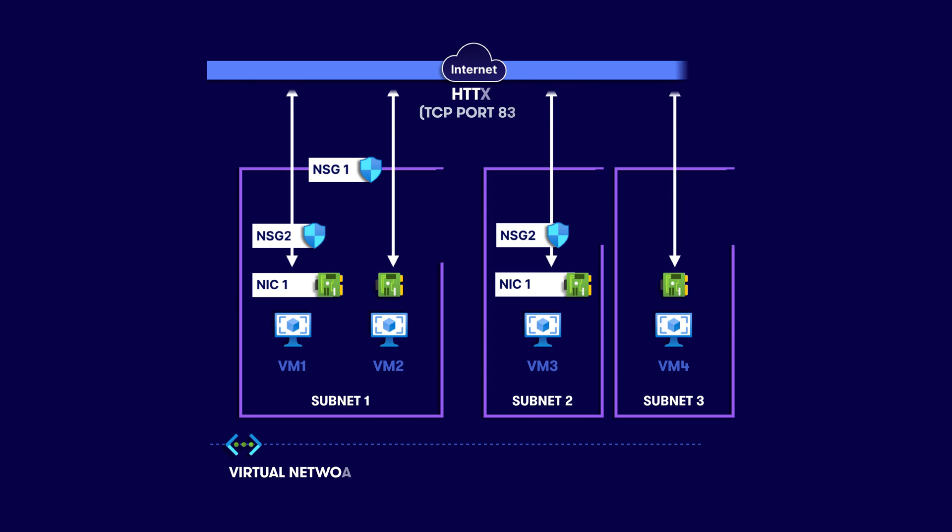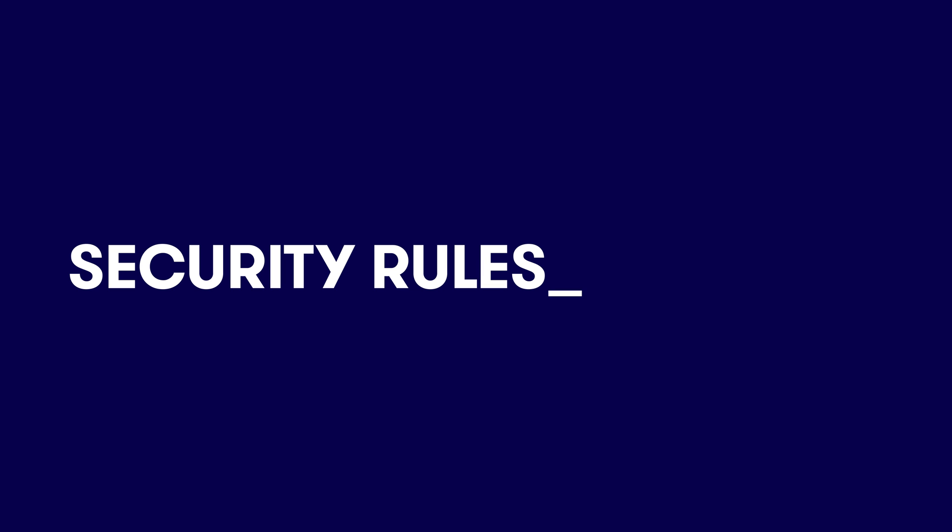In short, NSGs protect networks and VMs in Azure from unwanted internet traffic, either by being associated with a subnet, a virtual machine, or both. So how do network security groups then protect resources? Rules. Lots of rules. Rules that come for free. Rules you have to configure. Rules to keep you warm at night.